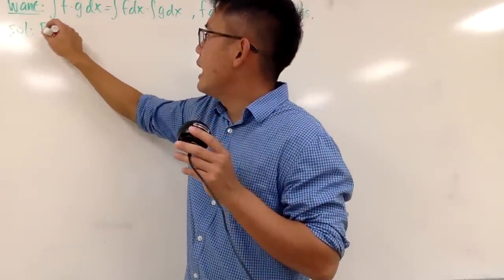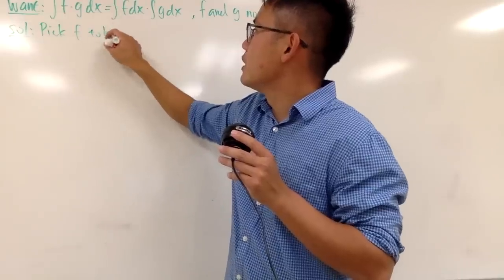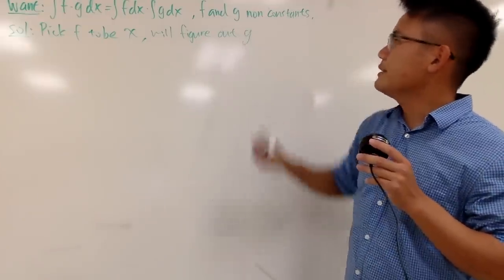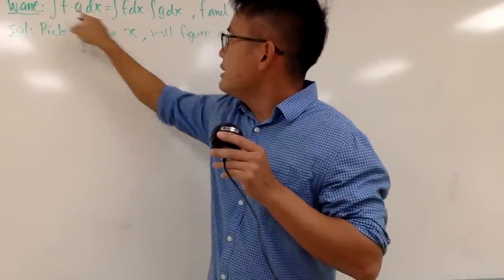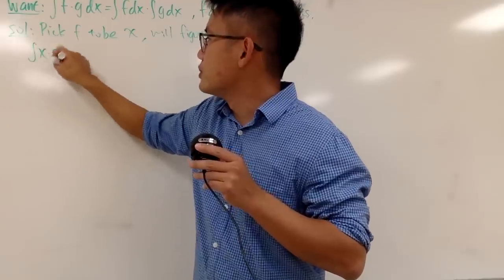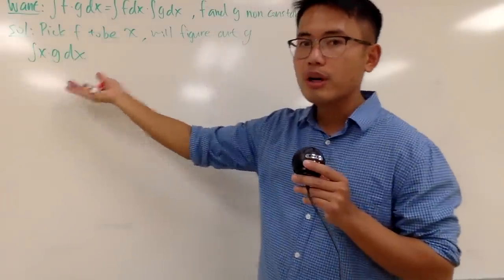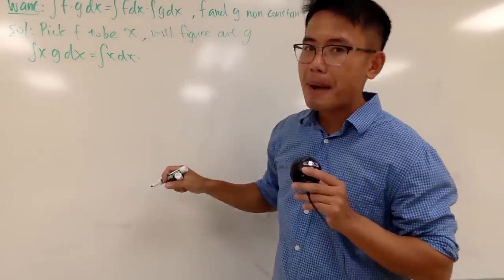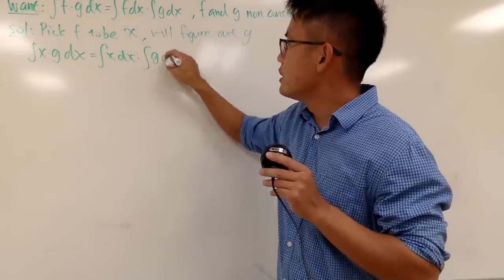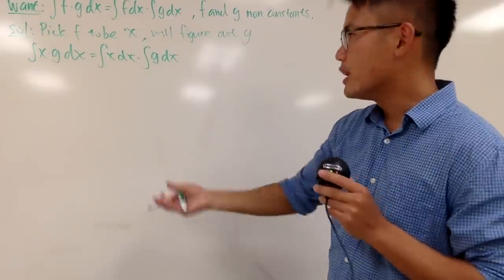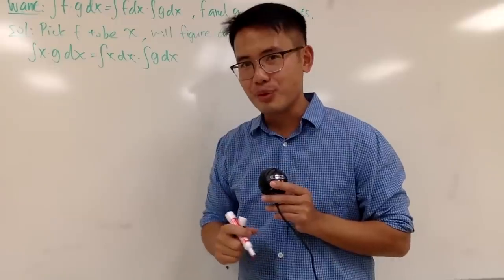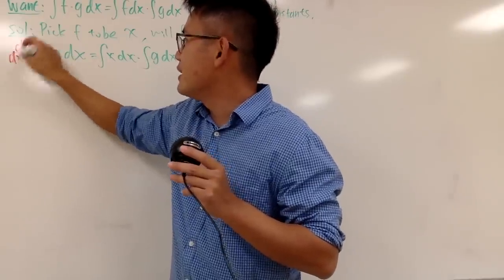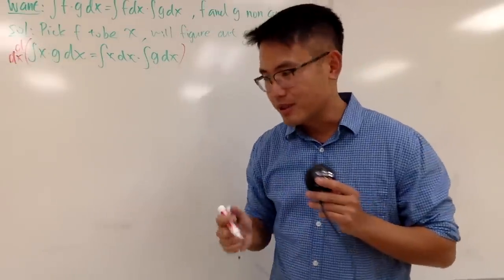I'm going to pick f to be just x, and then we'll figure out a function for g. So we are looking at the integral of x times g dx — this is just one integral. And on the right-hand side, we have the integral of f, which is x, multiplied by the integral of g. We'll figure out what g should be. We have three integrals and g is inside an integral, so we have to get rid of the integral. To do so, we can just differentiate, because the derivative and the integral cancel each other out.